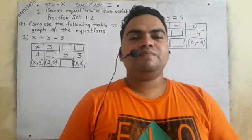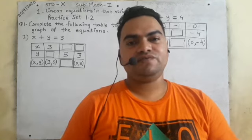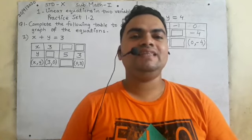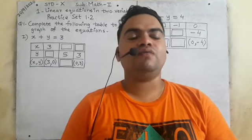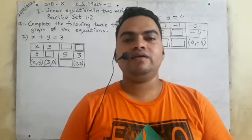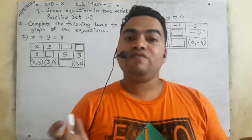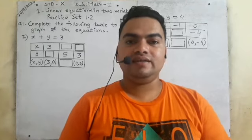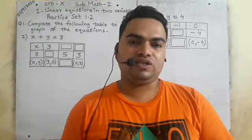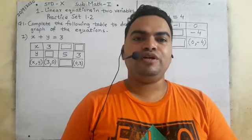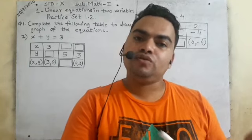Hello everyone, this is Imran Parthisi sir and today I will be continuing Standard 10th Maths, Chapter 1: Linear Equations in 2 Variables. In the last session we saw how to solve Practice Set 1.1, where we solved simultaneous equations whose coefficients were interchanged, and also normal simultaneous equations. Now see Practice Set 1.2 — in this we will see how to solve equations to draw the graph.